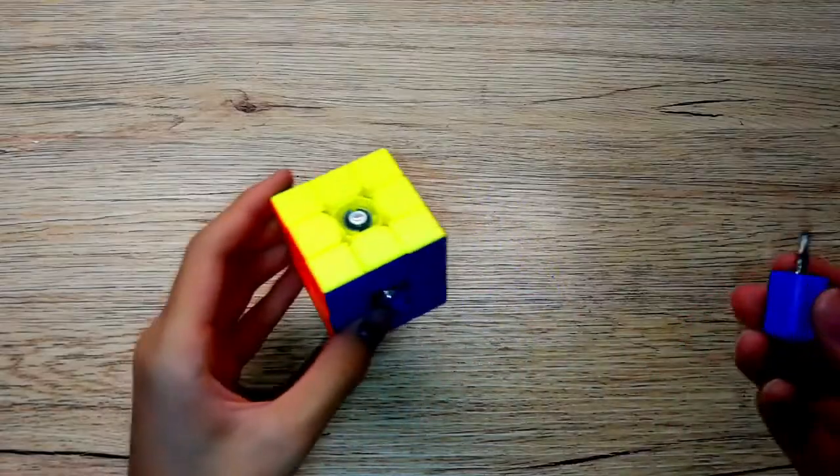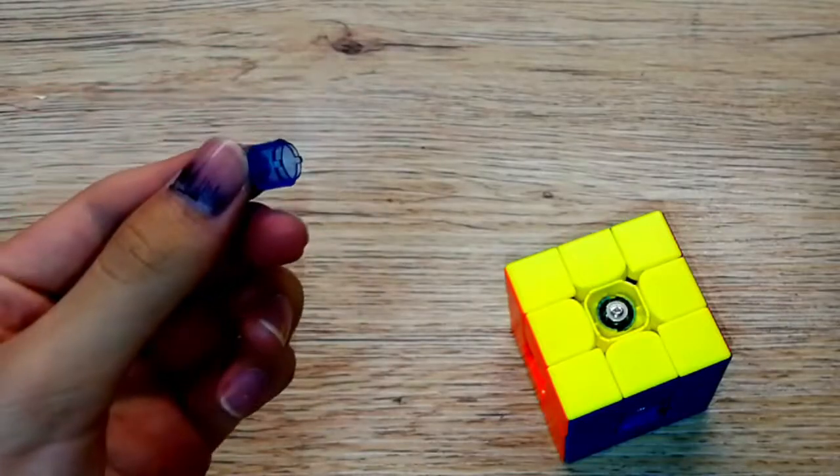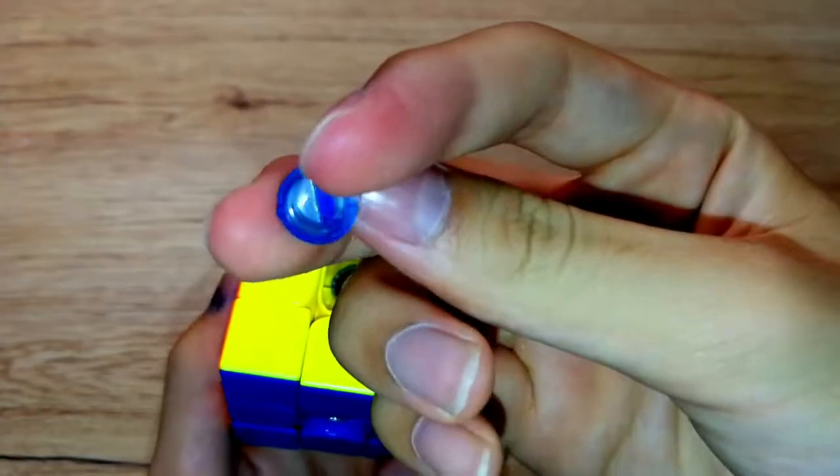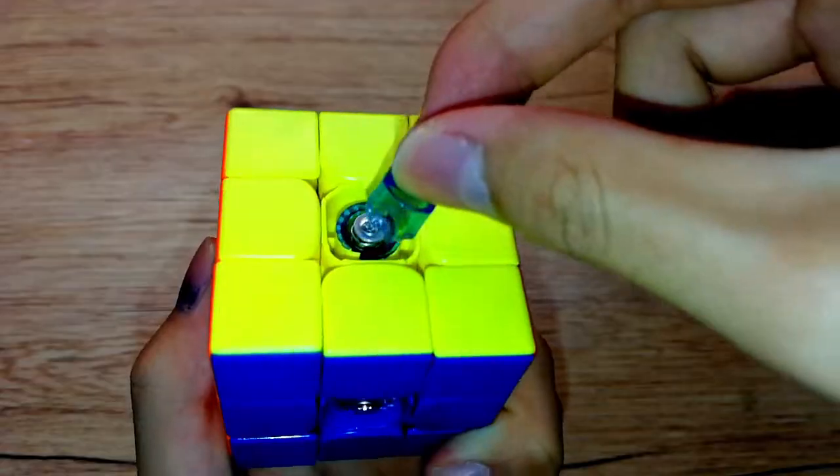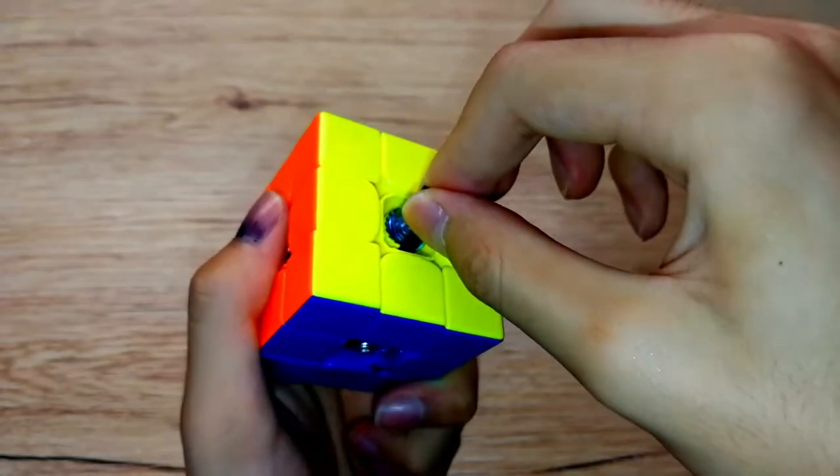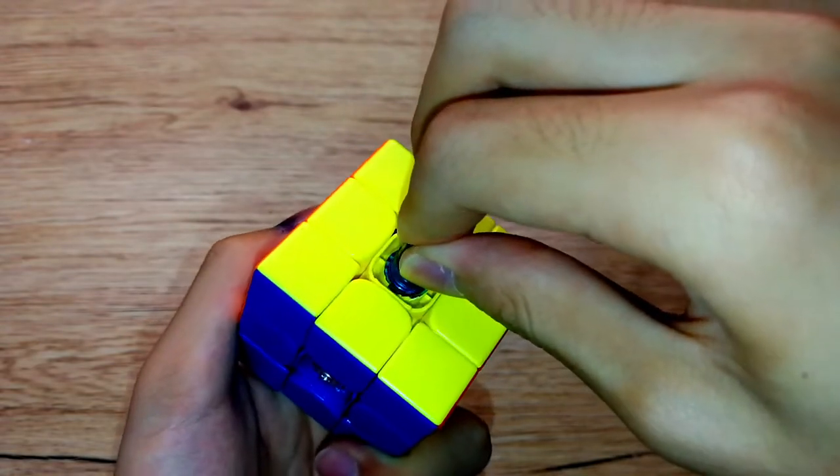The screws are done, time for the spring compression system. The screwdriver is useless now, this thing is useful. You get this thing and there are two gaps right here. You align them just like this and then turn it anti-clockwise to make the settings higher.